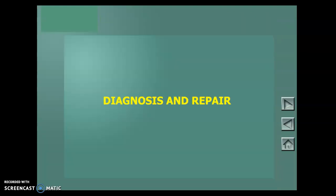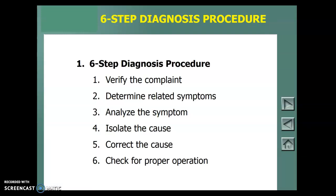So, a little bit about diagnosis and repair and how these systems work. First thing I like to tell, and this works for not just HVAC AC, but this is kind of a six-step diagnostic procedure process. Everyone has their own procedure, but for the most part, it's similar to this one. You want to verify the customer's complaint. Determine related symptoms. Analyze a symptom. Isolate the cause. You've got to correct the cause, and then make sure it's working before you give it back to the customer.